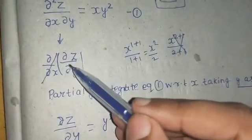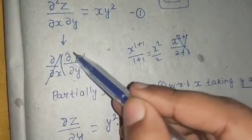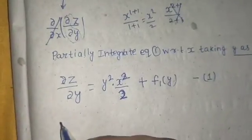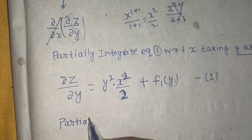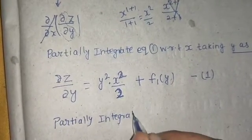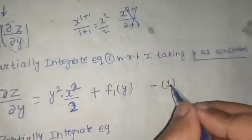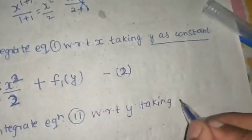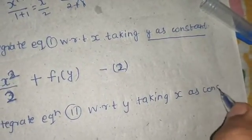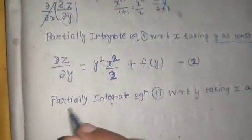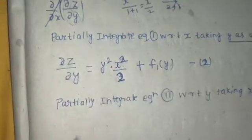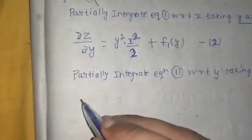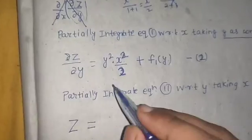Now we have removed the first gift wrap, and what we see is del by del Y remaining. To remove this, we will partially integrate equation number two with respect to Y, taking X as constant. This del by del Y will be removed — the final wrap of the gift is gone — and we get Z.